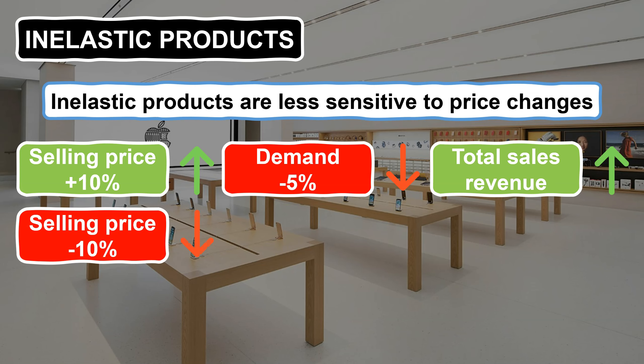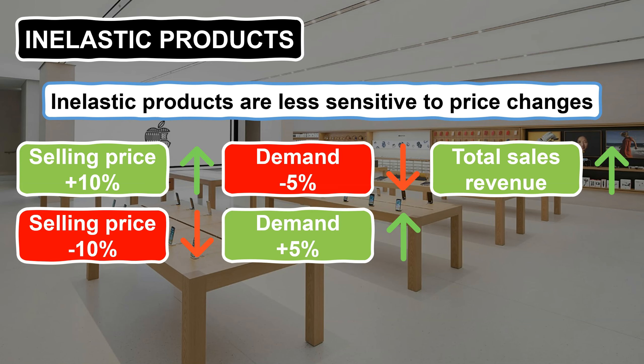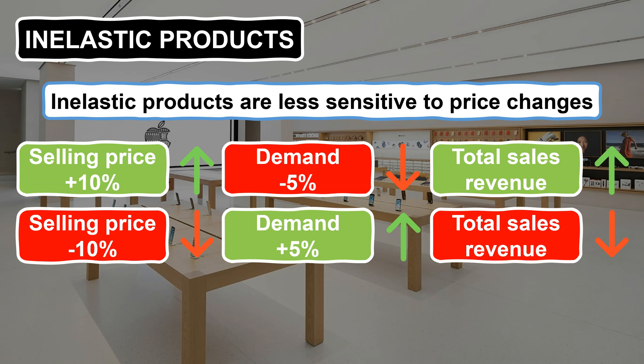The business could decrease the selling price of an inelastic product by 10%, but demand is likely to increase by less than this — let's again use a 5% change in demand. This would be bad for business as total sales revenue would be lower, because the percentage increase in demand is lower than the percentage price decrease. So to summarise, if a product is price inelastic, total sales revenue will go up if the selling price is increased, but if the selling price is reduced, total sales revenue will also go down. Essentially, changes to the selling price have the same impact on total sales revenue, so reducing selling prices isn't an effective method for inelastic products.